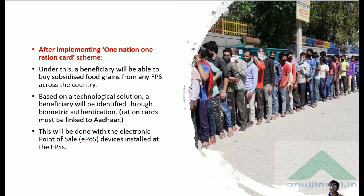After implementation of One Nation One Ration Card scheme, this practice will come to an end. A beneficiary will be able to buy subsidized food grains from any FPS across the country. Based on a technological solution, a beneficiary will be identified through biometric authentication, done via the electronic POS machine installed at the FPS.